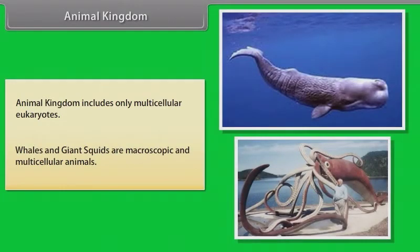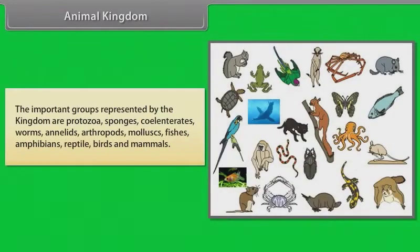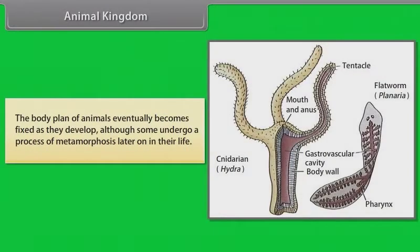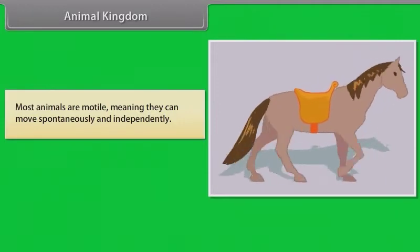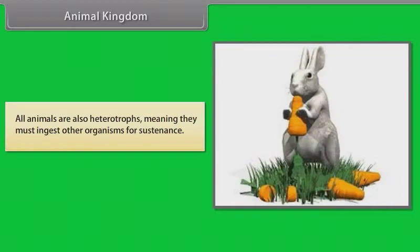The animal kingdom includes only multicellular eukaryotes. Whales and giant squids are macroscopic and multicellular animals. The important groups represented by the kingdom are protozoa, sponges, coelenterates, worms, annelids, arthropods, mollusks, fishes, amphibians, reptiles, birds and mammals. The body plan of animals eventually becomes fixed as they develop, although some undergo a process of metamorphosis later in their life. Most animals are motile, meaning they can move spontaneously and independently. All animals are also heterotrophs, meaning they must ingest other organisms for sustenance.